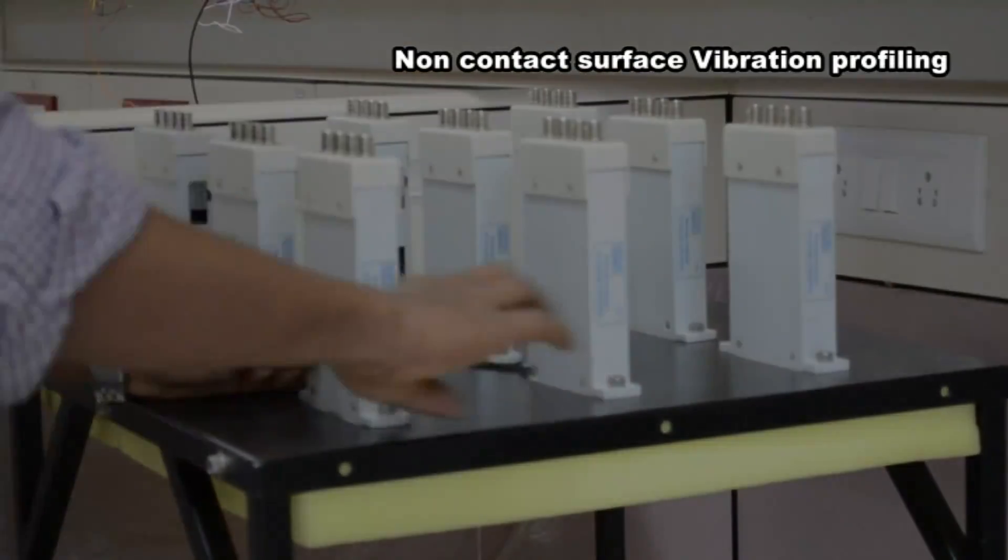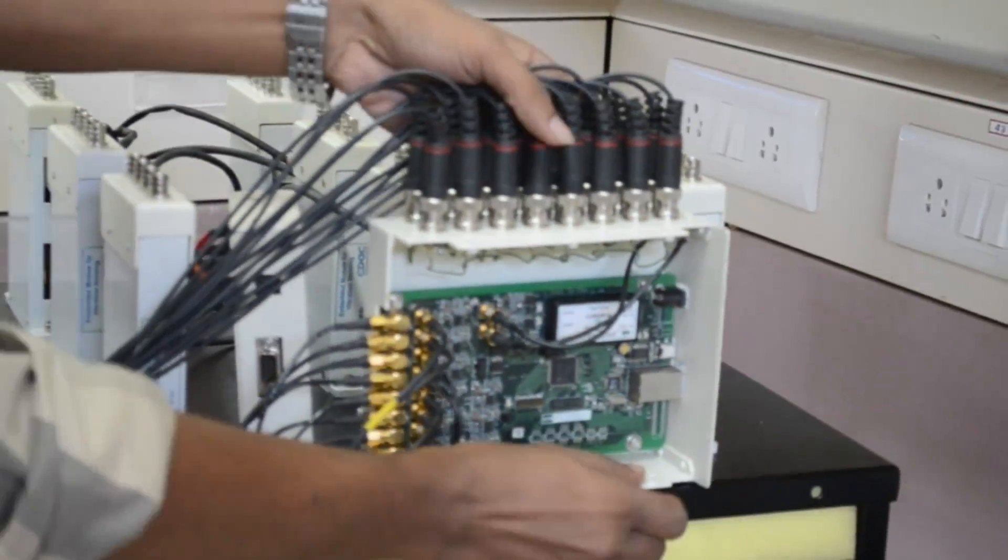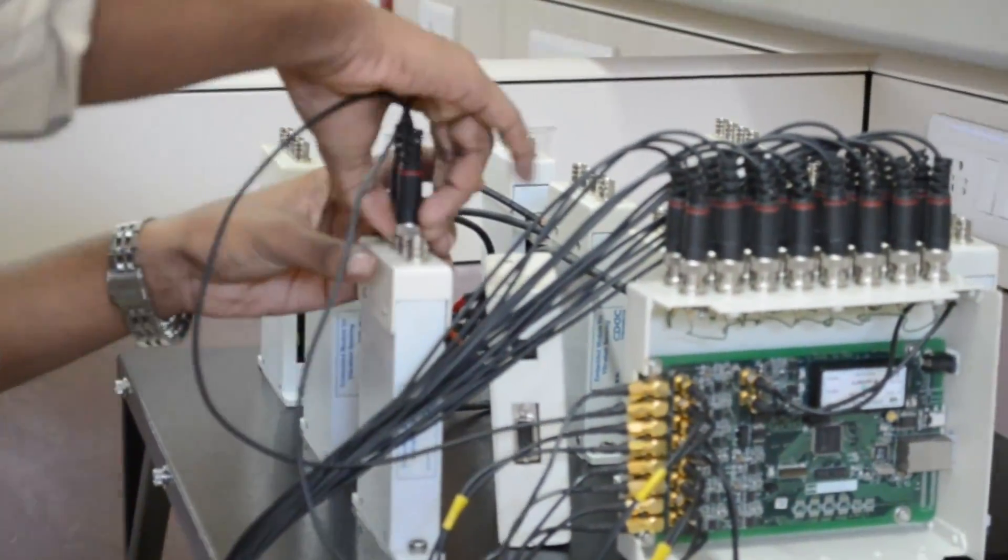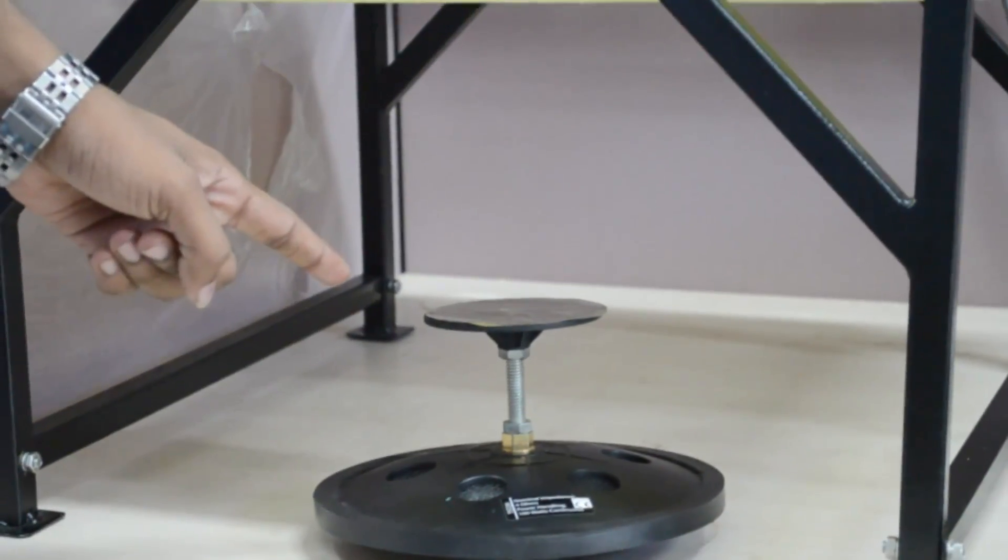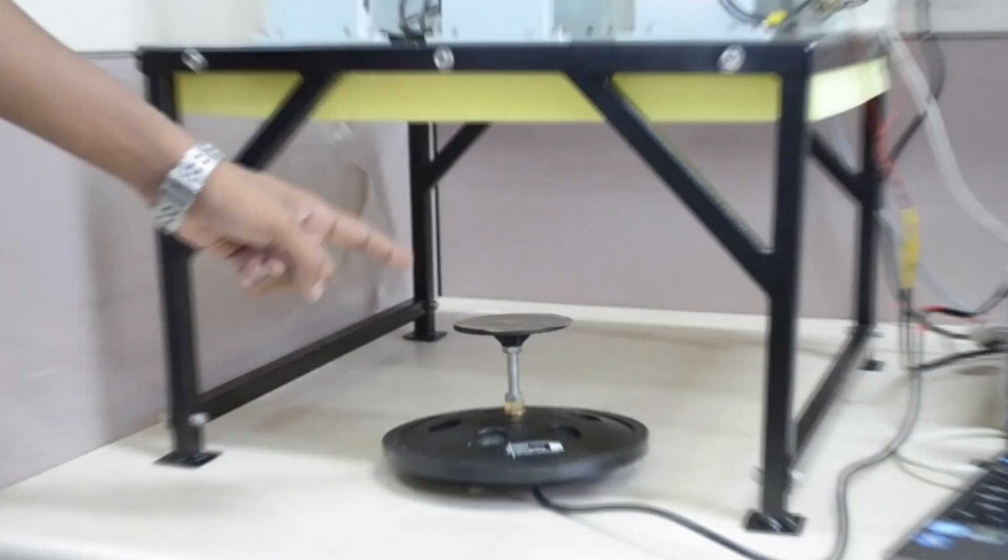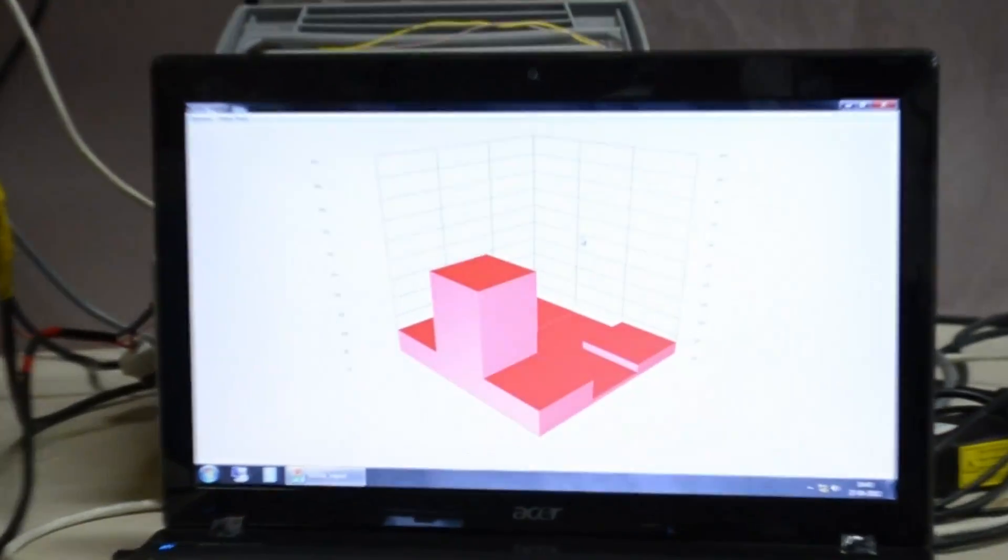The sensor array fixed in 3x3 square matrix formation. The data acquisition card being connected onto the sensor array. The function generator used to excite the target. The tactile transducer is used as vibration source. The sensor picks up the vibration. The corresponding 3D profile is shown in the PC software.